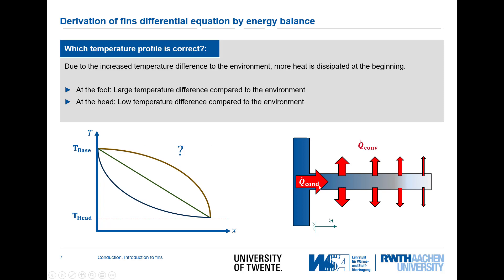Because we have a higher heat flux removed at the bottom of the fin, we have a steep gradient initially since a lot of heat is released to the fluid. Further toward the top of the fin, the heat transfer by convection becomes lower and thus the slope of the temperature profile also becomes lower. So the correct profile has a convex shape.